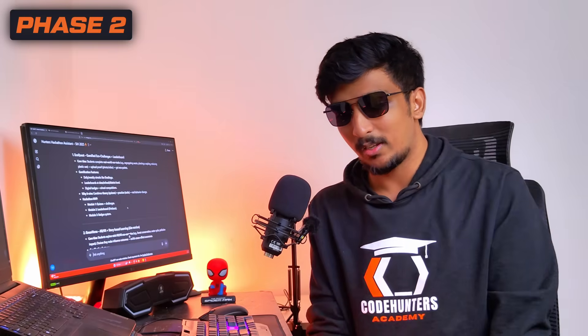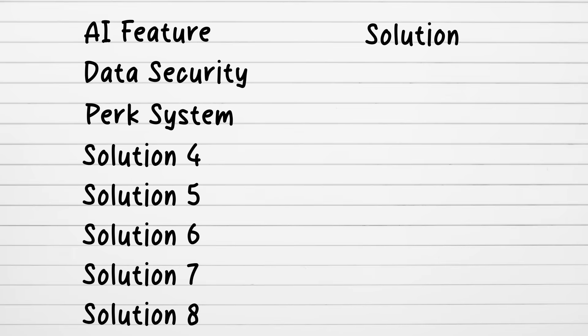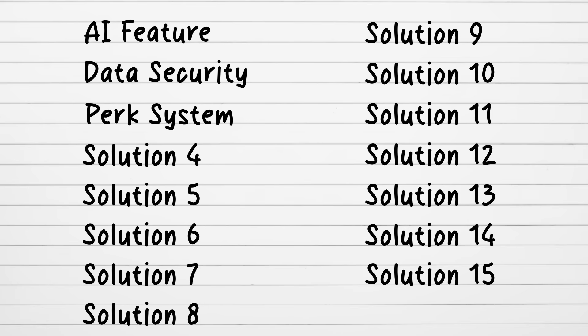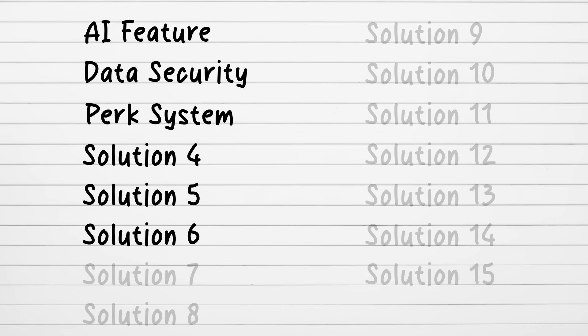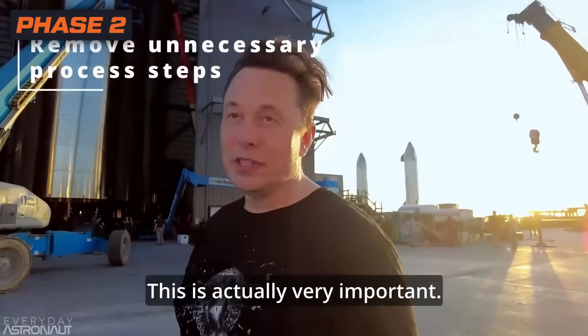You try to dump out all solutions for the problem — that's not how it works. Take a paper, write down all 14-15 features, then cut them down step by step. Ask: if I remove this feature, will the product still work? Keep cutting until you reach five or six core solutions where removing any one of them means the core problem won't be solved. Shortlist to that stage — that's when you can build a perfect prototype.